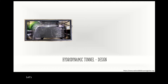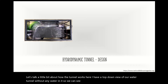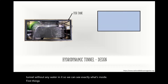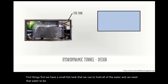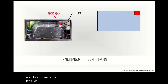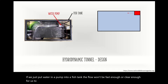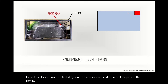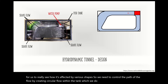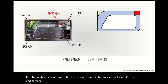Let's talk a little bit about how the tunnel works. Here is a top-down view of our water tunnel without any water in it so we can see exactly what's inside. First things first, we have a small fish tank that we use to hold all of the water, and we need that water to be moving so we can see what happens to the flow over certain shapes, so we need to add a water pump. Now if we just put water and a pump into a fish tank, the flow won't be fast enough or clear enough for us to really see how it's affected by various shapes, so we need to control the path of the flow by creating circular flow within the tank, which we do by placing blocks into the middle and corners of the tank to help shape the flow the way we want.